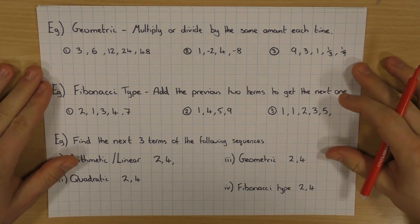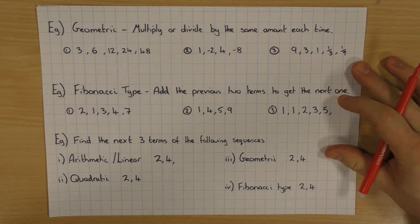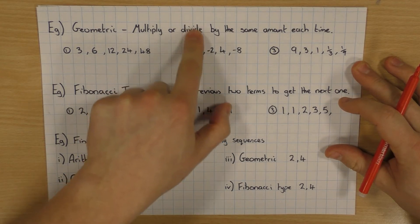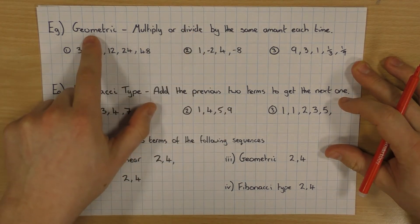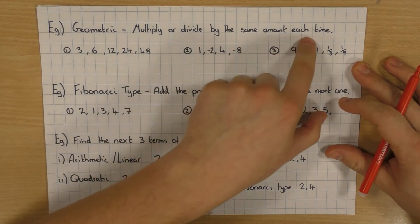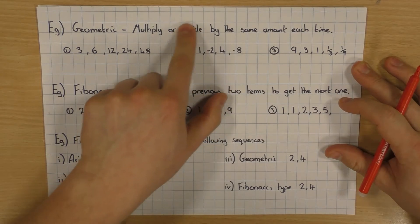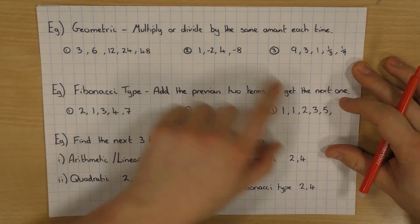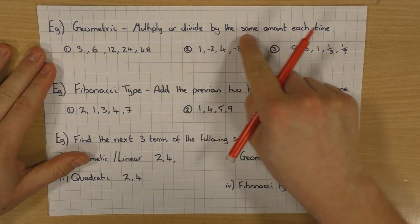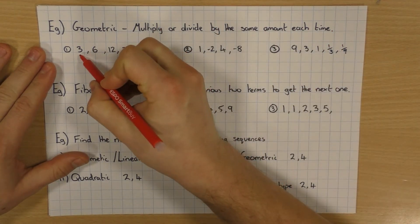The next one I'm going to have a look at is a geometric sequence. Now this is when you multiply. I've put divide here, but that's more to help you spot that it's a geometric sequence. Because you actually always multiply by the same amount each time. So I'll come on to what I mean by divide in a minute. And we'll have a look at some examples.